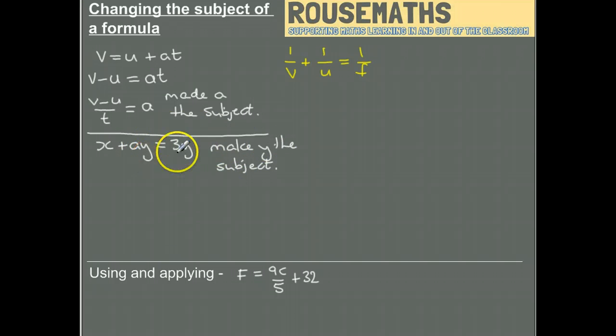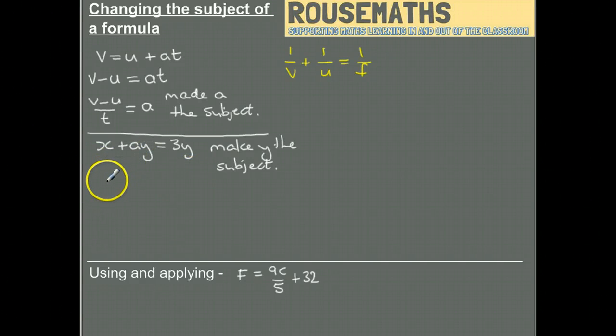The issue we've got is that we've got two y's, one being multiplied by a and one being multiplied by three. First thing to do is to get them both on the same side with no other y terms with them.